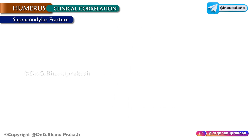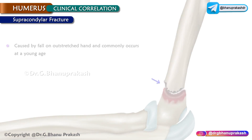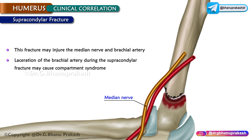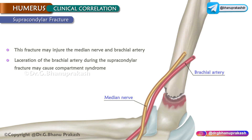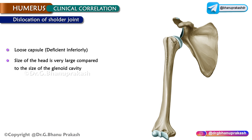Supracondylar fracture of the humerus is caused by a fall on an outstretched hand and commonly occurs at a young age. Clinically, it presents as a backward displacement of the lower fragment with an unduly prominent elbow. This fracture may injure the median nerve and the brachial artery. Dislocation of the shoulder joint is more common due to the capsule being loose and the size of the head being very large compared to the size of the glenoid cavity. The most common dislocation of the shoulder joint is the inferior dislocation.